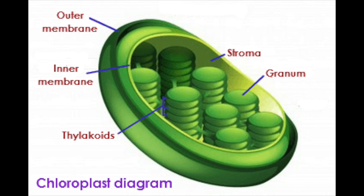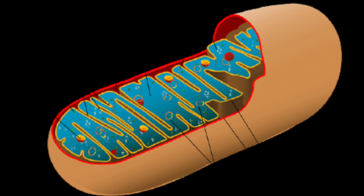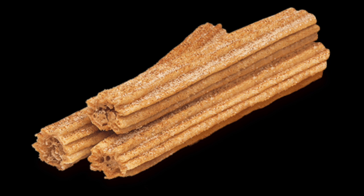The mitochondria is very important in the cell. It converts food into energy for the cell, since the cell cannot use the raw nutrients that it gets. And it kind of looks like a maggot.